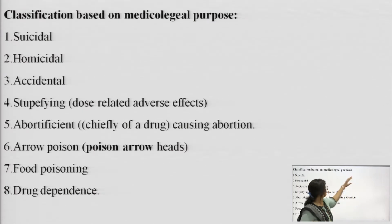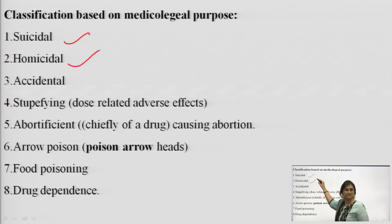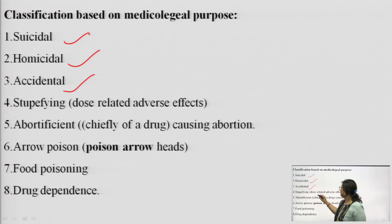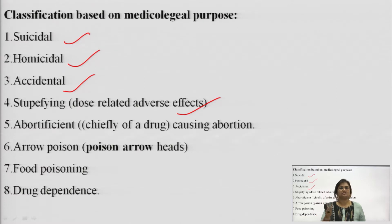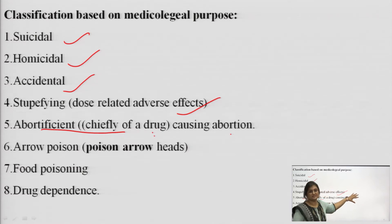Poison can also be classified based on medico-legal purpose. Suicidal — knowingly if somebody takes it. Homicidal — for killing someone. Accidental — unknowingly swallowing, ingesting, or inhaling the poison. Stupifying — that is, dose-related adverse effect, where somebody takes a larger dose of a normal drug than required for its therapeutic activity, so the increased dose acts as a poison. Abortifacient — drugs used for causing abortion, that is killing the fetus inside the body.